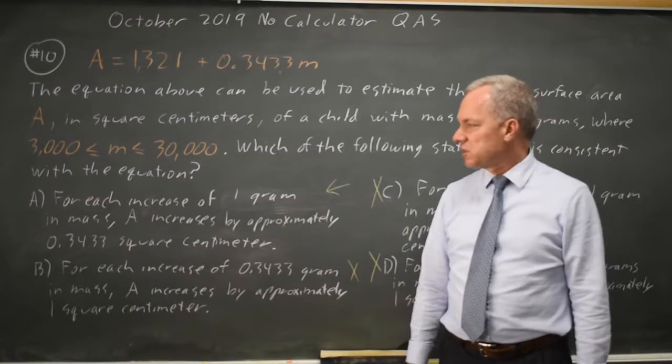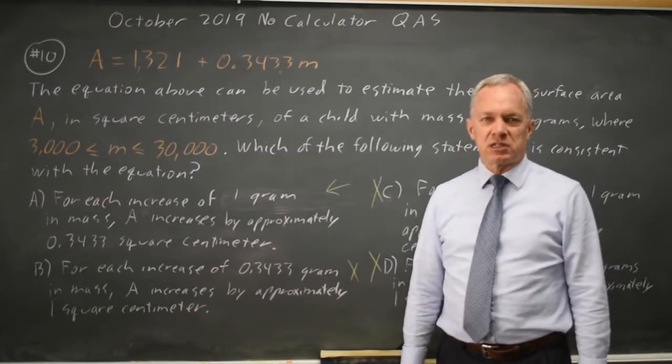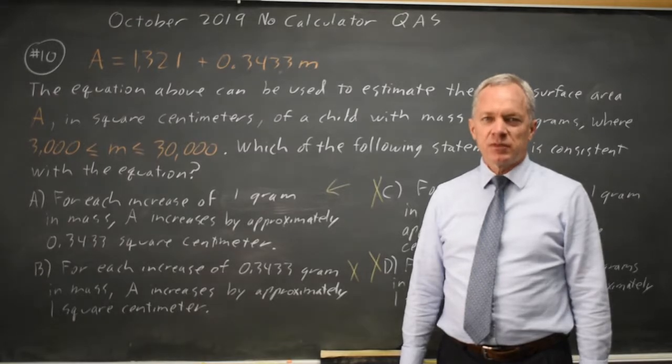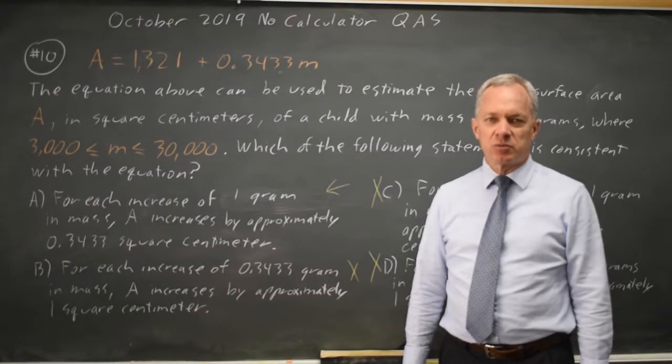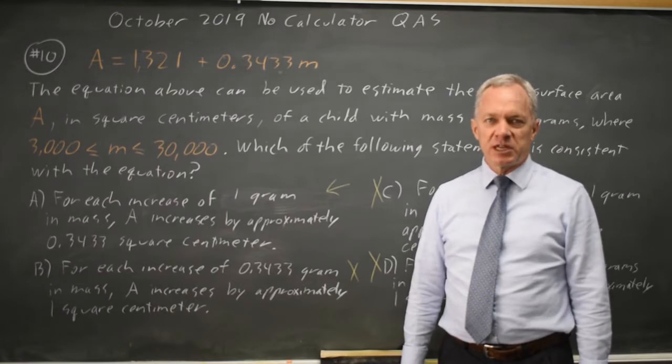Choice A is the correct interpretation of the coefficients in this problem where they are interpreting our slope. Again, College Board often asks you to interpret slope or intercept or both in the context of a word problem, so make sure you can translate these, and come back soon for my next video. With math, there's always more.